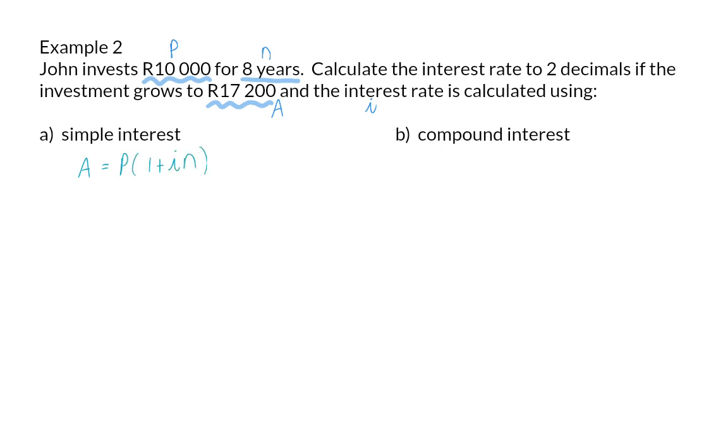Now we can substitute what we were given and then similar to calculating the N value I'm going to start by getting rid of what is outside the bracket by dividing by the 10,000 rand on the left. On the right we are left with only the inside of the bracket which is 1 plus 8 times I. So if we next subtract the 1 on both sides we will have 18 over 25 which will equal the 8I.